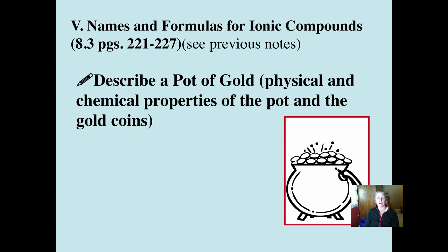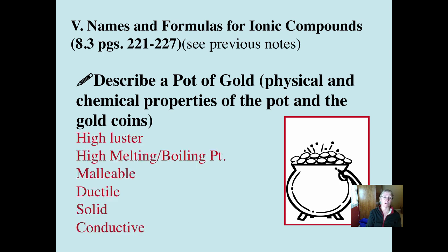Let's start out by doing a simple description. If you were going to describe a pot of gold — the physical and chemical properties of either a pot of gold or gold coins — you'd probably start out by saying they look shiny. You can pound them out thin and flat, you can stretch things into a wire, and you can conduct electricity. Essentially, when you describe the properties of a pot of gold, you're describing the properties of metals in general.